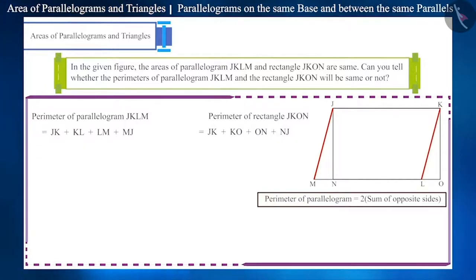We can write it like this also. For parallelogram JKLM as 2JK plus 2MJ and for rectangle JKON as 2JK plus 2NJ. Here, 2JK is common to both sides.